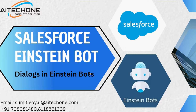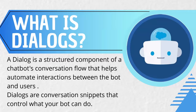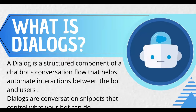First of all, let's try to understand what exactly Einstein Bot is and what dialogues are. Basically, a dialogue in Einstein Bot is a structured component of a chatbot conversation that helps automate interaction between the bot and the user. It helps establish communication when a user interacts with a chatbot. Dialogue boxes are presented to the user to show messages, show information, or gather information from the user. Dialogues are conversation snippets that control what a bot can do.